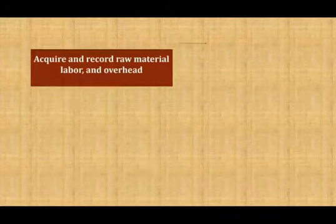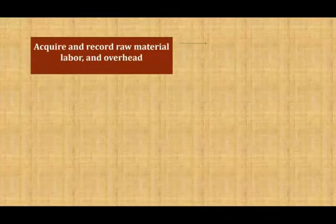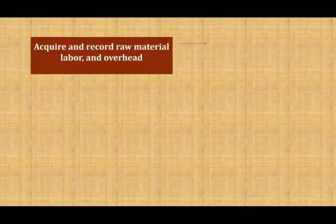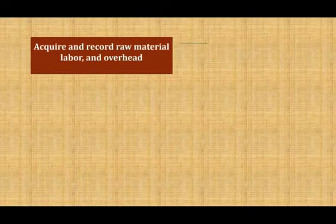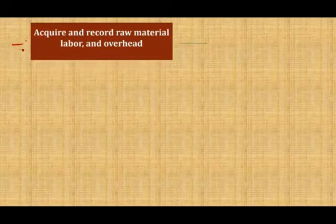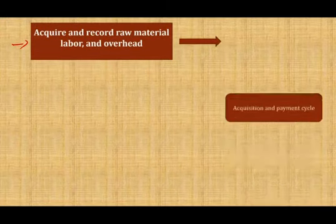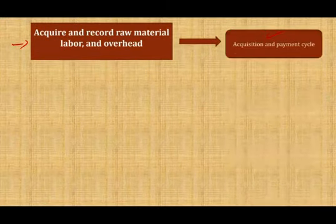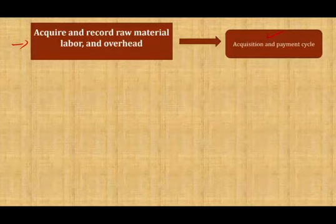The first part is acquire and record raw material, labor, and overhead. As mentioned in the introductory video, inventory is partly tied to sales and partly to purchases. This cycle in the inventory is already audited in the acquisition and payment cycle, which was covered in another recording.